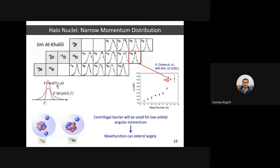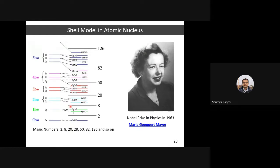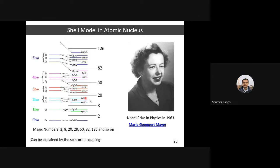The shell model orbitals — s, p, d shells — were described by Maria Goeppert Mayer, who incorporated spin-orbit coupling to explain magic numbers. When a valence nucleon sits in the s or p orbital, it could be a halo nucleon because of the low centrifugal barrier allowing the wave function to extend largely.